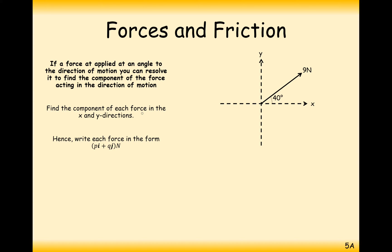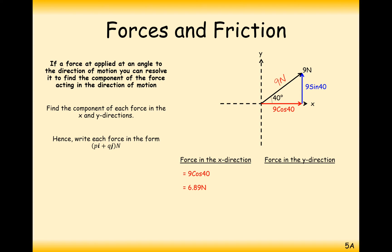For this question, we need to find the components of each force in the x and y directions, and write the force in the form pi + qj newtons. We create a right-angled triangle — always make sure the force is on the hypotenuse. The horizontal (red) component is 9 cos 40, and the vertical component is 9 sin 40, giving values of 6.89 and 5.79 respectively. The horizontal component is larger because at 40 degrees the force pulls more to the right than upwards.